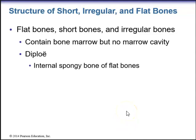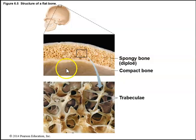Short, irregular, and flat bones have a similar structure but don't have a marrow cavity like long bones. Within flat bones, the internal spongy bone is called the diploë. These bones feature trabeculae (little beams) with spaces between them.